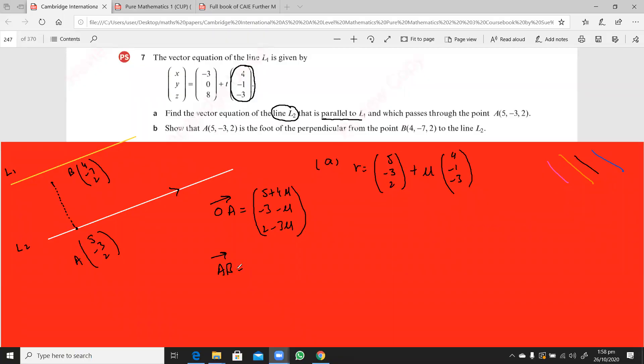so that we can perform the dot product of AB with the direction vector of L2, that will give us this mu, and then we'll put that mu into this OA to show that this A is this 5, minus 3, 2. So let's find this AB.